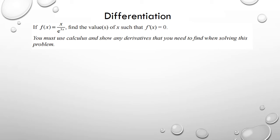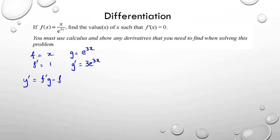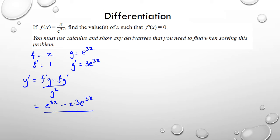This was an achieved question from last year. They're asking us to find the values of x such that the gradient equals 0, so I need to differentiate using the quotient rule. I'll set f = x, g = e^(3x), so f' = 1 and g' = 3e^(3x). Then y' equals (f'g minus fg') over g squared, giving e^(3x) minus 3xe^(3x), all divided by e^(3x) squared.